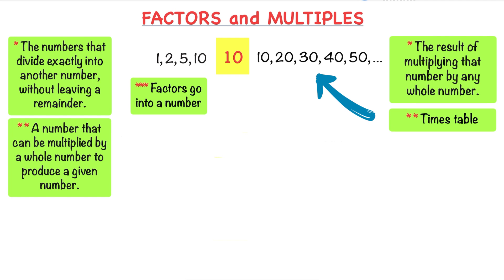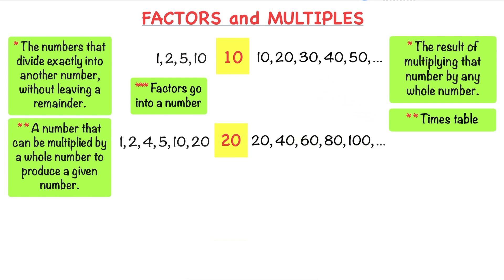Factors are less than or equal to the number, whereas multiples are greater than or equal to that number. Can you spot a similar pattern with 20 or any other numbers we worked with today? Try it yourself.